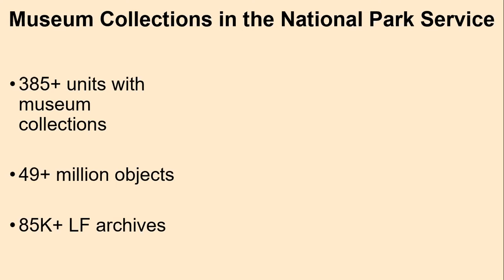Of the 423 national parks, national historic sites, national battlefields, and more that NPS manages, over 90% — that's 388 sites — have museum collections. We've got 49 million objects and over 85,000 linear feet of archives. But you shouldn't be concerned that I'll be approaching museum security from the perspective of a single large organization.